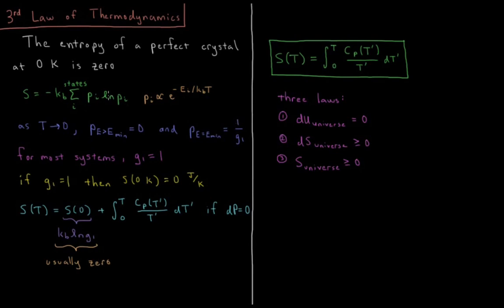The natural log of 1 is 0, so 1 times 0 is 0, and there's 0 entropy. So if our ground state is singly degenerate, then at 0 Kelvin we have 0 entropy in our system.